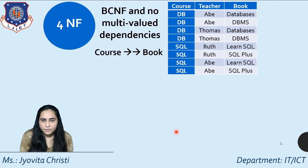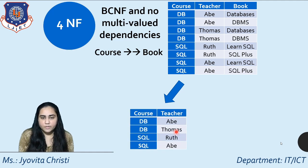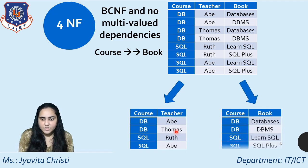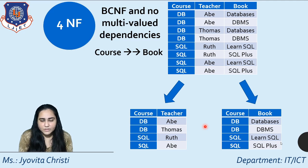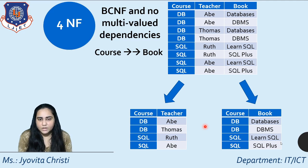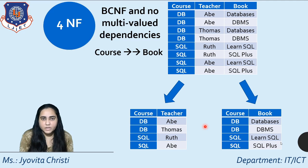To remove the multivalued dependency and bring the table into 4NF, we decompose it into two parts: the first part contains course and teacher, and the second part contains course and book. The multivalued dependency is gone because the teacher and book columns are now in separate tables — a multivalued dependency requires two columns to be present together.